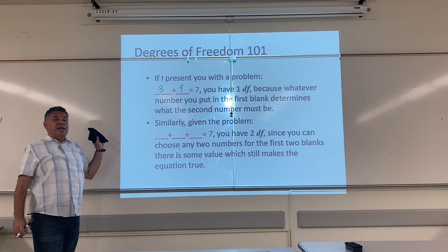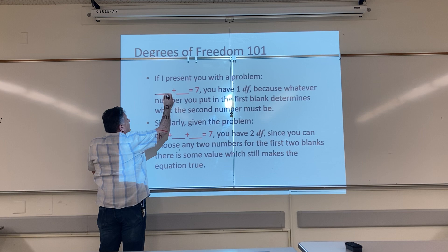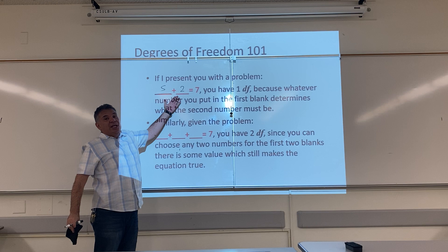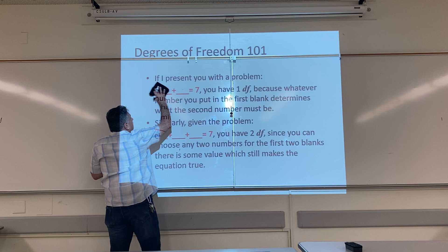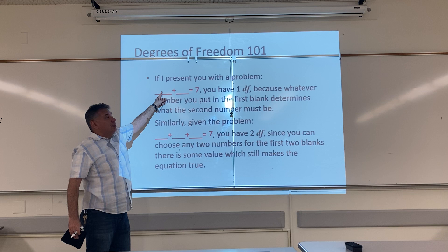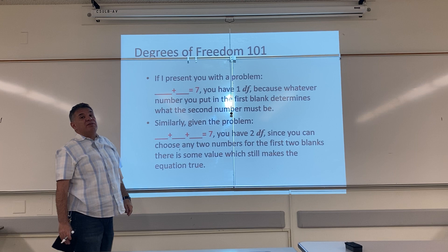The minute I use up all my freedom, everything after that is restricted. This first blank can be any number — it can be 5. But the minute all my freedom is used up, this number becomes restricted. There's only one number I can put in here to make this equation true. So you have one degree of freedom here, because whatever number you put in the first blank determines what the second number must be. This is free, this is restricted. There's only one free space, so you only have one degree of freedom.